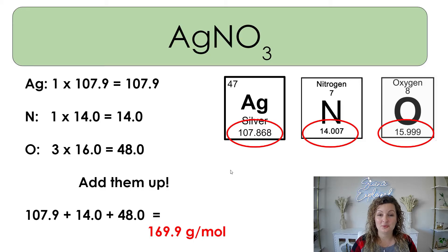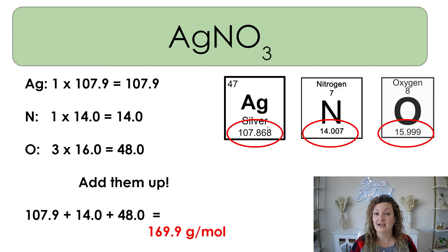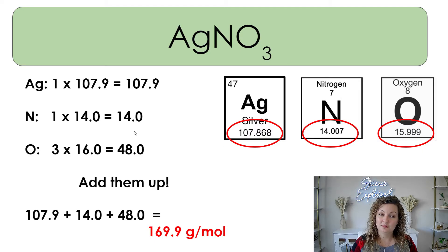On to the next one, AgNO₃. Locate them on the periodic table and see how many you have of each one. One Ag, multiply that by 107.9. One nitrogen, multiply that by 14. And three oxygen, multiply that by 16. Once your multiplication is done, add it up, and you end up getting 169.9 grams per mole.